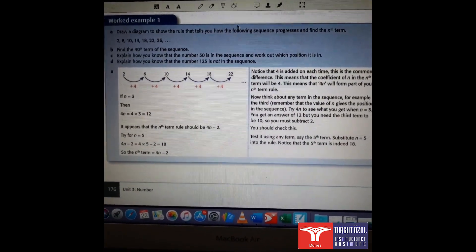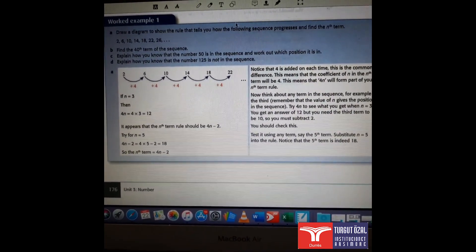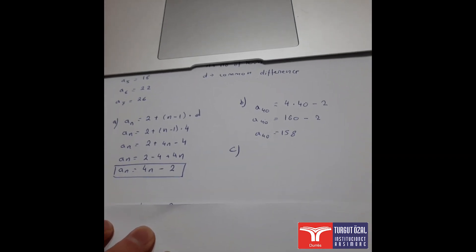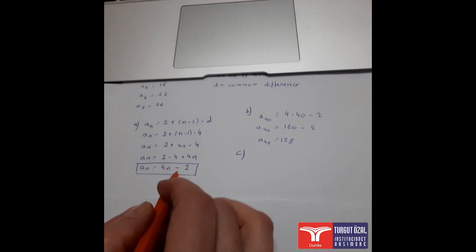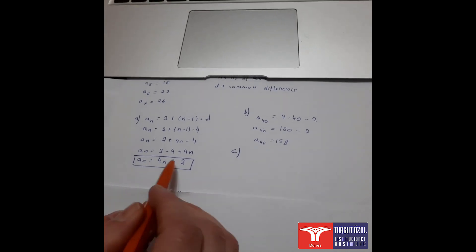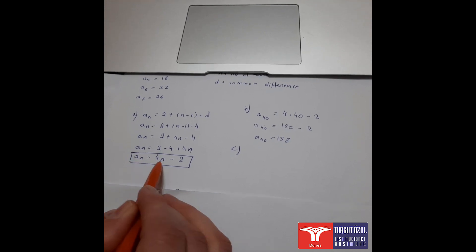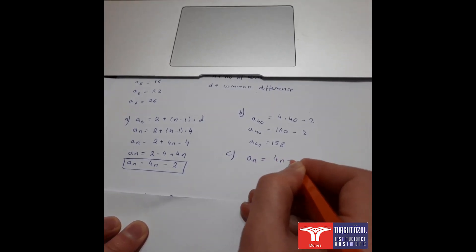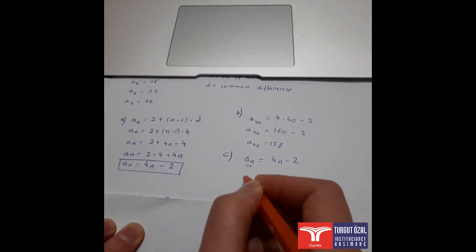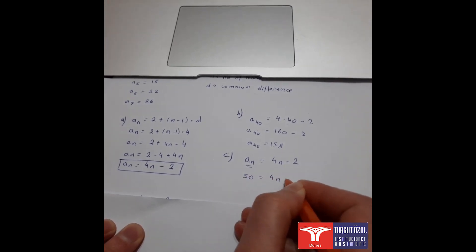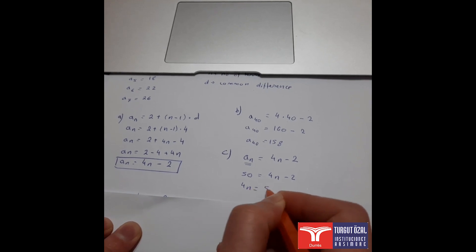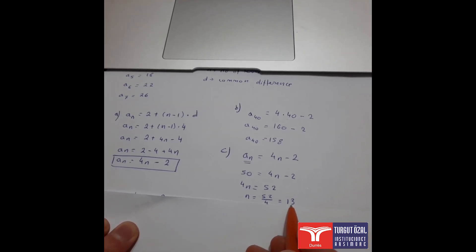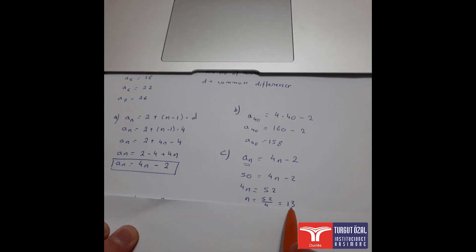Let's move to question C: explain how you know that the number 50 is in the sequence and work out which position it is in. We know the rule of our sequence, so we substitute 50 for an: 50 = 4n − 2, which gives 4n = 52, so n = 52 ÷ 4 = 13. Since n is a whole number, yes — 50 is in our sequence and it is the 13th term.